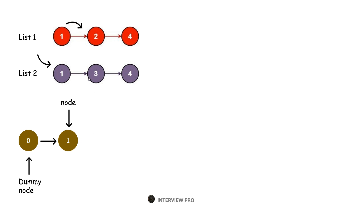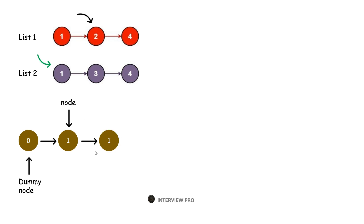Since we already added this node from list 1, we'll move the pointer to the second node in list 1, while the pointer in list 2 still points to node 1. Now comparing 1 and 2, the smaller one is in list 2. So let's add that node to our dummy list and update the node pointer.